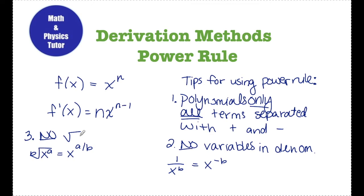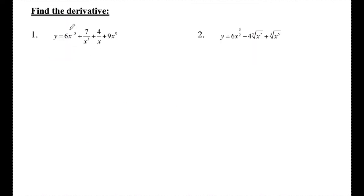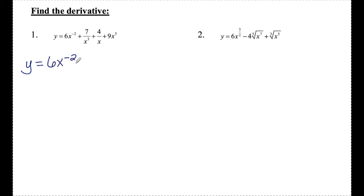Let's look at a couple of examples. Number one — find the derivative. When I look at this function, I notice the terms are of the form number-variable-exponent, all separated by plus signs. There are no parentheses implying multiplication and no big fractions implying division. The only concern is the x in the denominator in two of the middle terms. So first I'm going to rewrite y, being careful with notation so I know when I'm rewriting versus when I've taken a derivative.